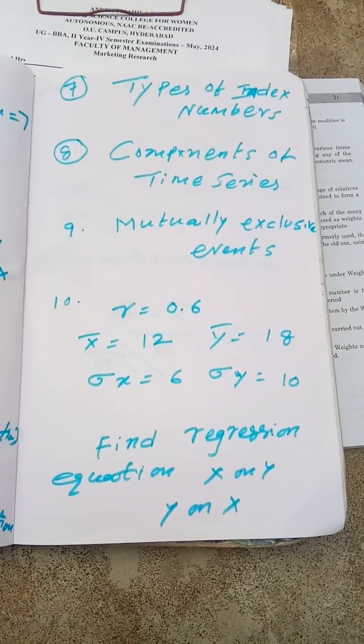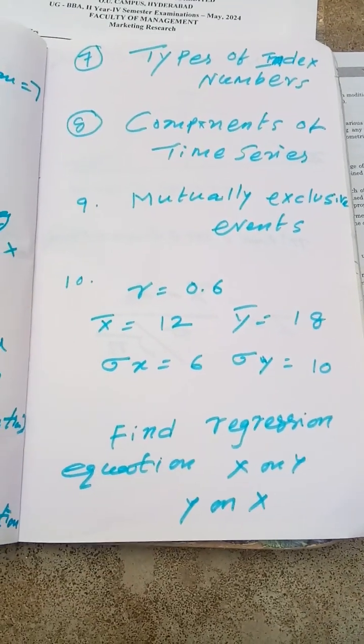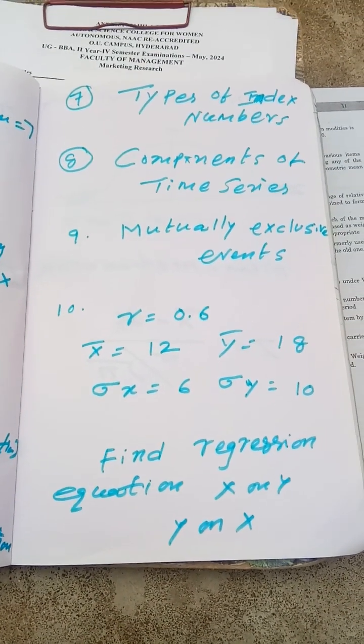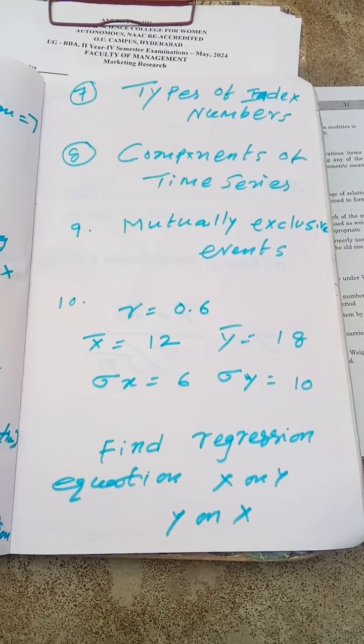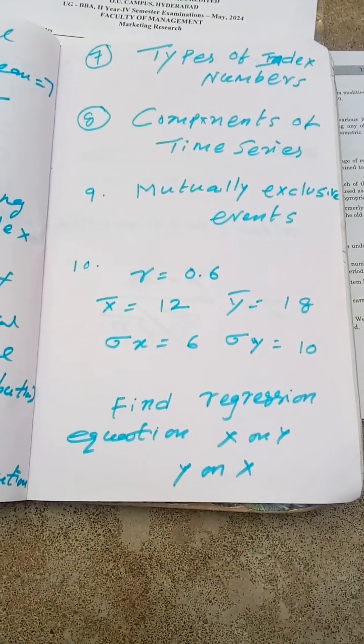You can choose: r is equal to 0.6, x bar is equal to 12, y bar is equal to 18, standard deviation of x is equal to 6, standard deviation of y is equal to 10. Find out regression equation of x on y and y on x.